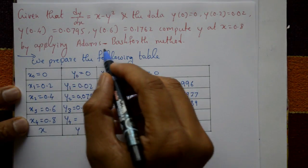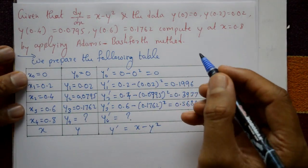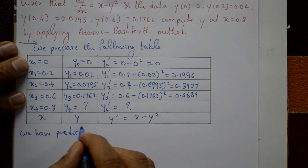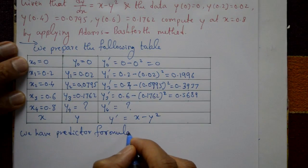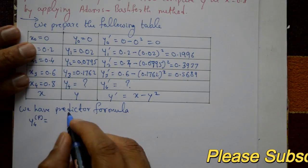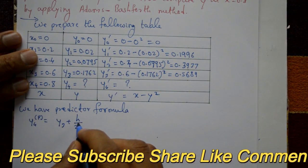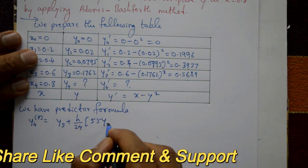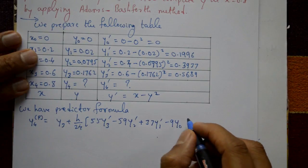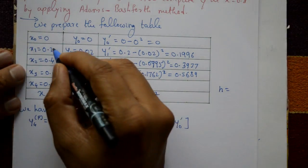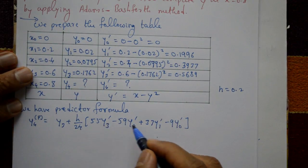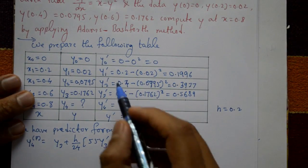In Adam's-Bashforth method we have two formulas: one is the predictor formula and one is the corrector formula. The predictor formula gives y₄ᴾ = y₃ + (h/24) × (55y'₃ − 59y'₂ + 37y'₁ − 9y'₀). The h value — the equal-distance step — is 0.2. We require the values y'₃, y'₂, y'₁, and y'₀.